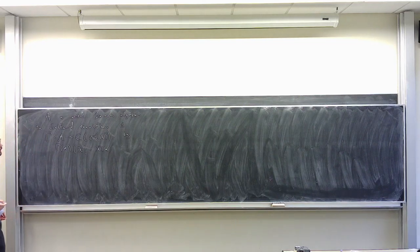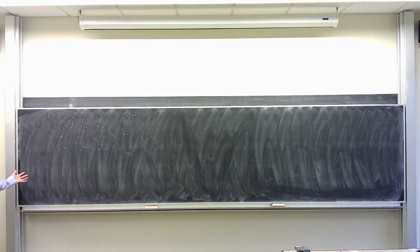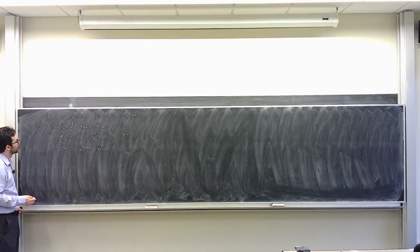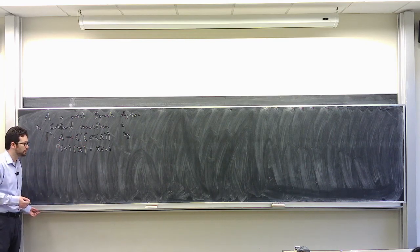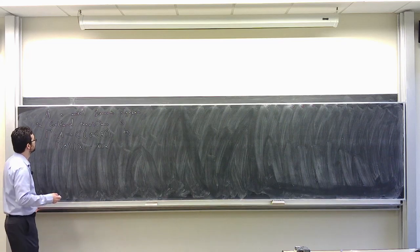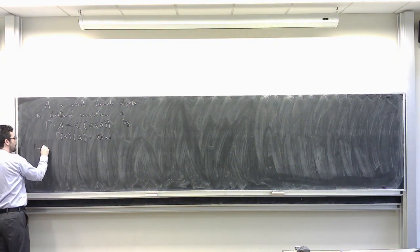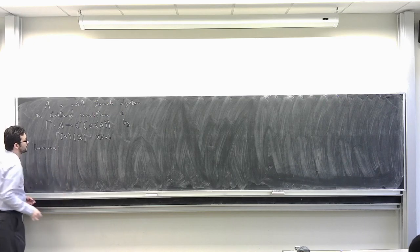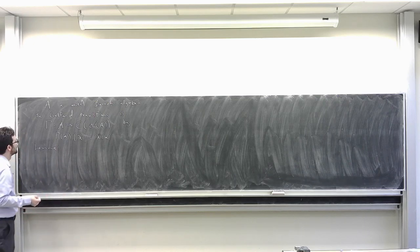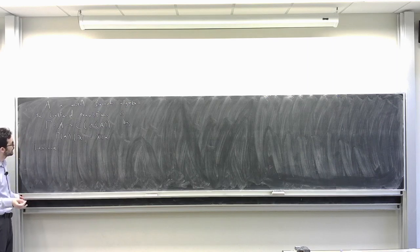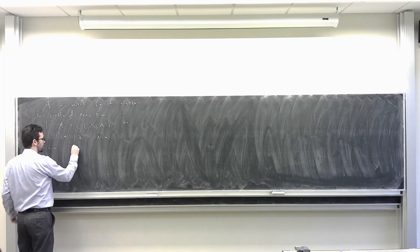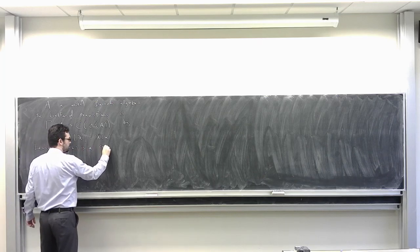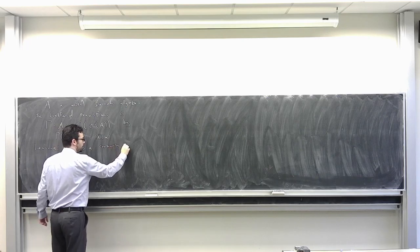Typically the double dual of a Banach space is much larger than the Banach space itself. But for C*-algebras, we'll see that this gives an isomorphism between these two spaces. The first thing we'll do is a lemma: even for a general Banach algebra, the Gelfand transform is at least a contractive homomorphism.